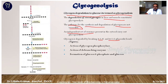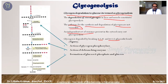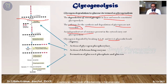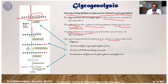While glycogenesis consists of four steps, glycogenolysis consists of three steps. Step one is the action of glycogen phosphorylase enzyme. Step two is the debranching enzyme. Step three is the conversion of glucose-6-phosphate to free glucose. Glycogen has long linear chains bonded with alpha-1,4 bonds and sub-chains bonded with 1,6 bonds.